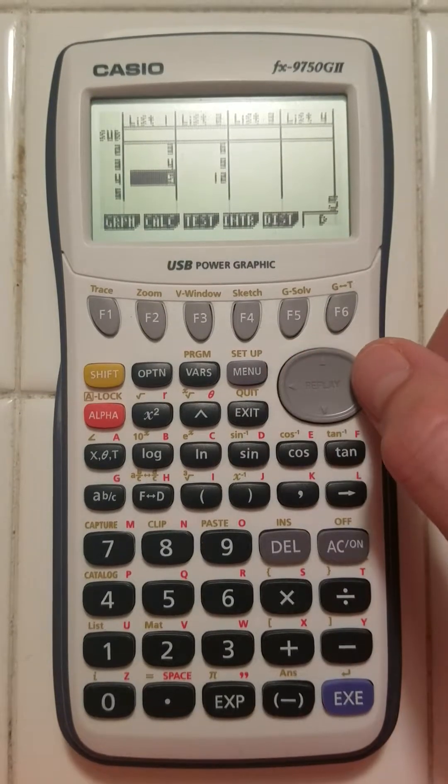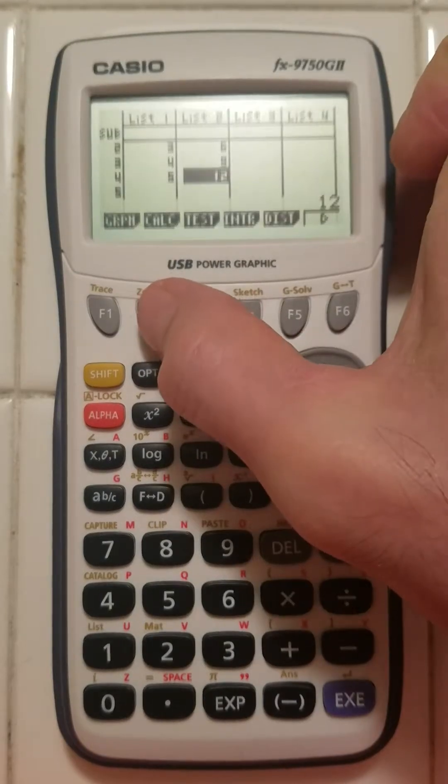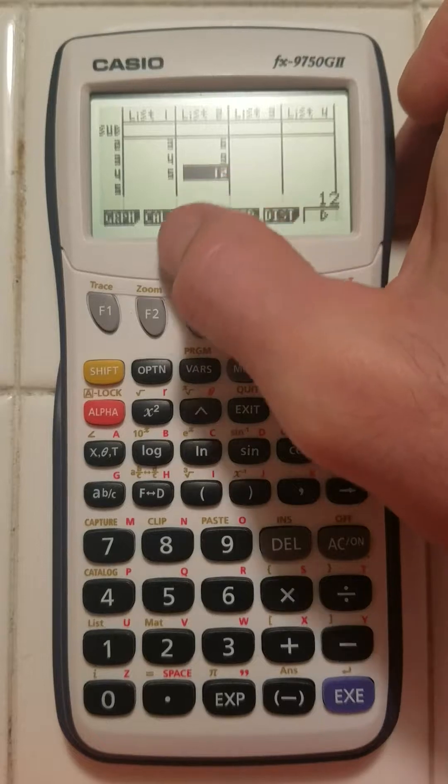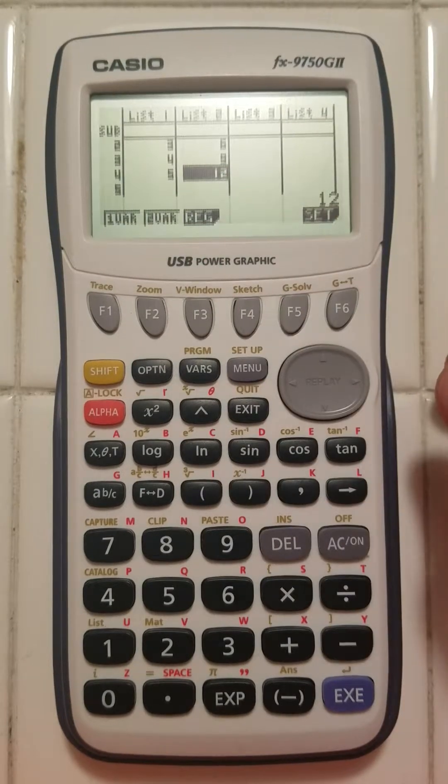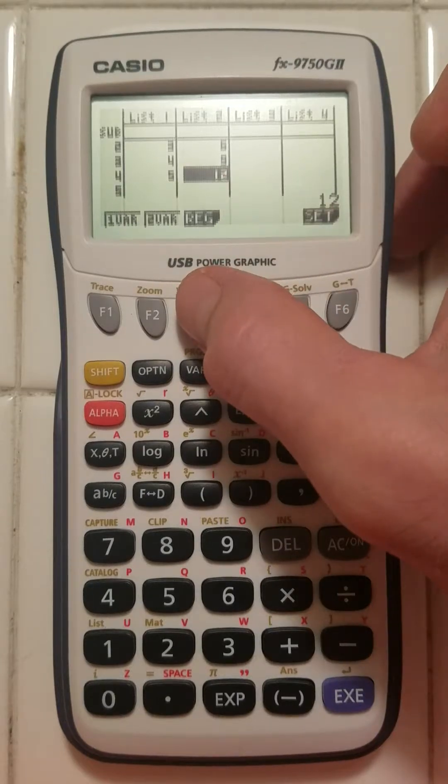Now to do linear regression, I'm going to hit F2, which lines up with the word CALC for calculate. So I press F2 and I want to do regression. So I can see REG for regression. I hit F3.